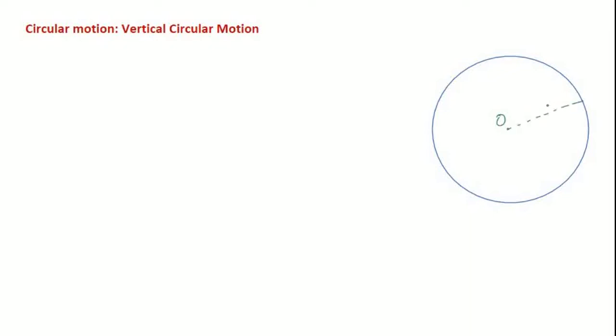Suppose there is a string of length r and you are revolving that string in a vertical circle. The center of the circle is O, and there is a string of length r connected to a particle of mass m. We mark some points on the circle: point A, point B, point C, and point D.